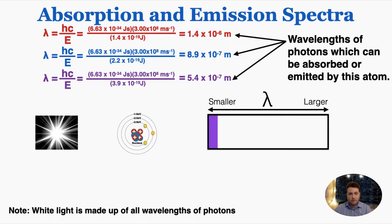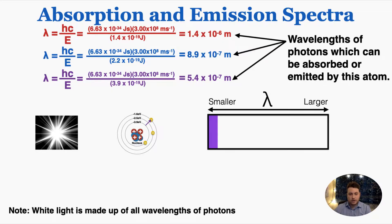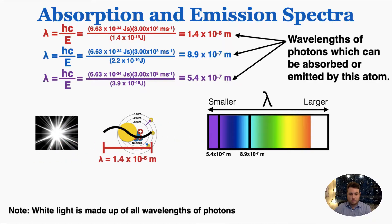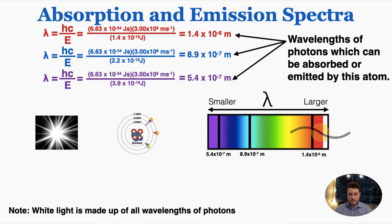Every possible wavelength of light would come out of the white light source and begin to fill our detector, including those three wavelengths the atom can absorb. When the wavelength of 5.4 × 10⁻⁷ meters appears, the atom absorbs that photon and it becomes electron energy, so the photon does not reach the detector. A very small black line appears at that wavelength on our chart. Similarly, 8.9 × 10⁻⁷ meters would be absorbed, producing another black line, and 1.4 × 10⁻⁶ meters would also be absorbed, creating a third black line.